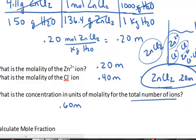But this is how the chemist thinks about that. I can separate that thought, 0.2 molal, into individual zinc ions, chloride ions, or the sum total of ions.